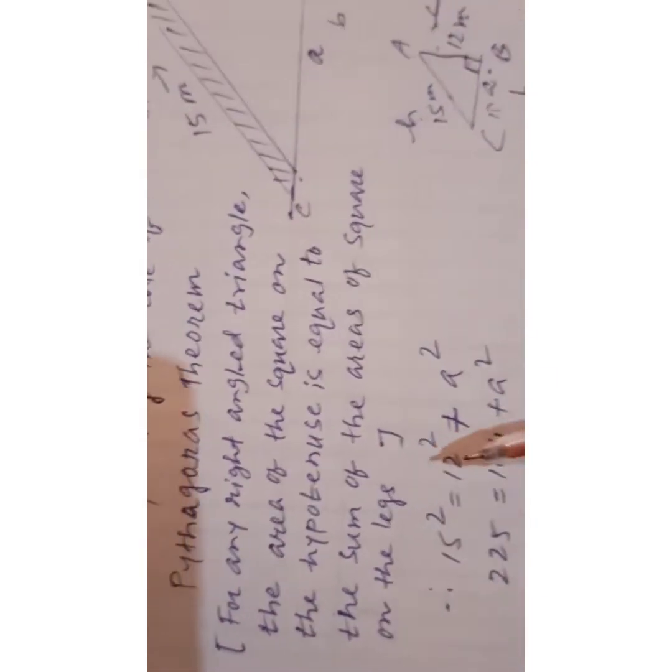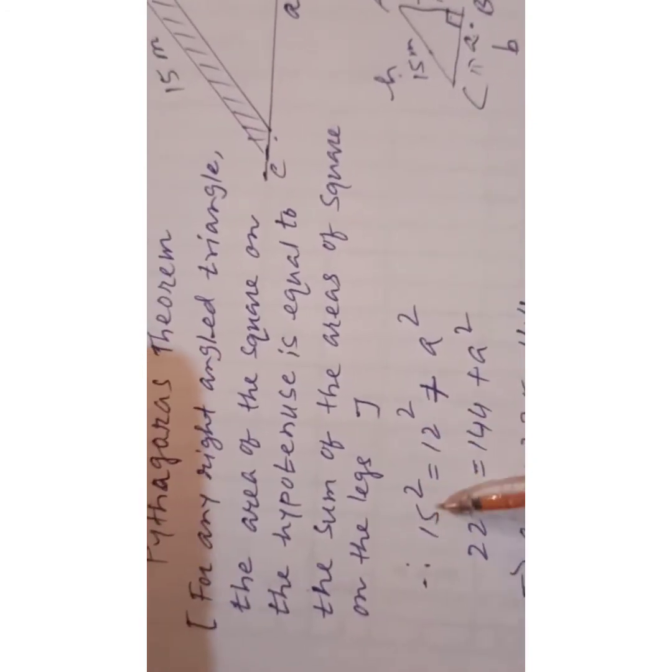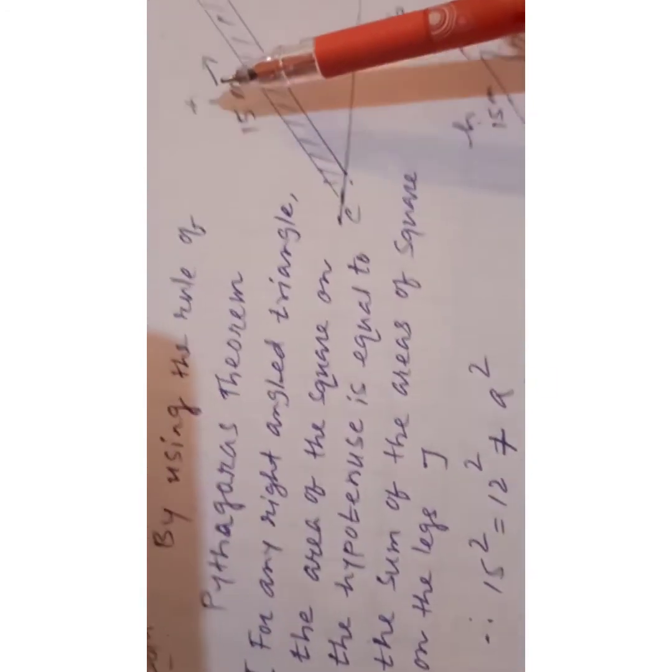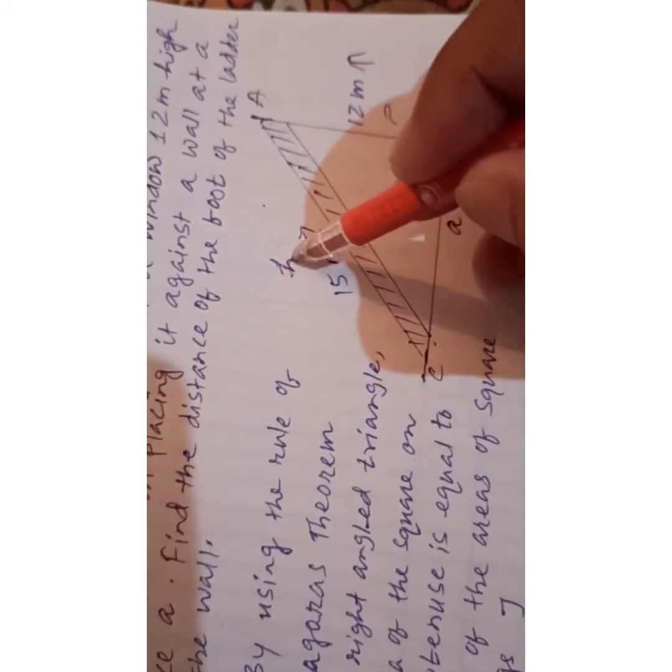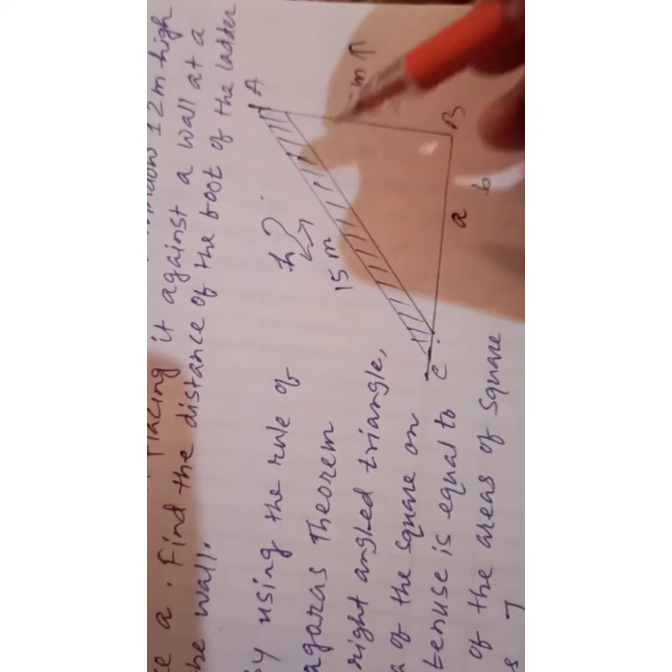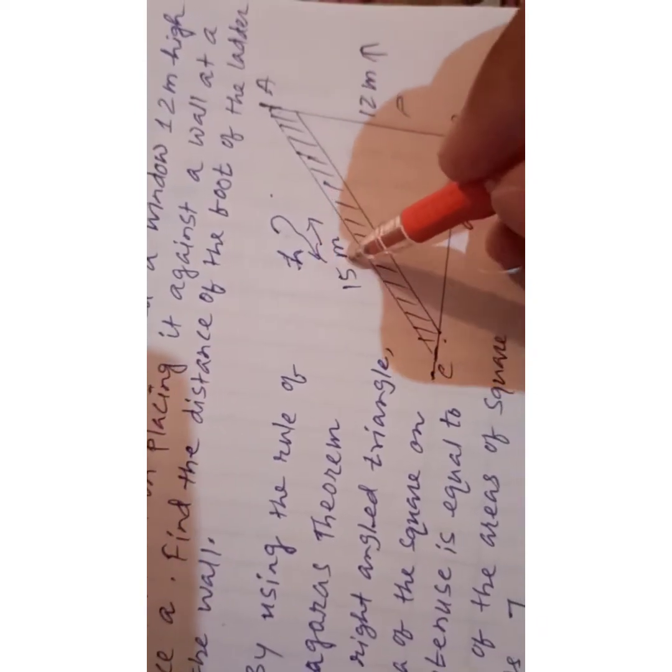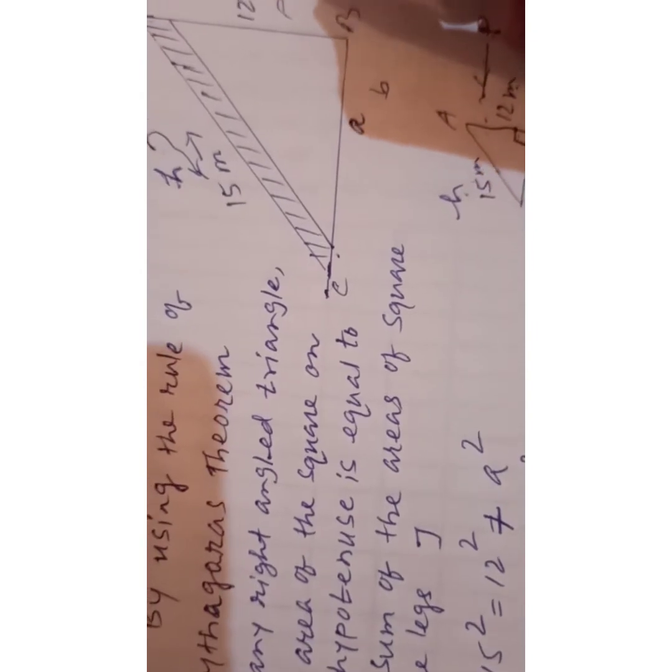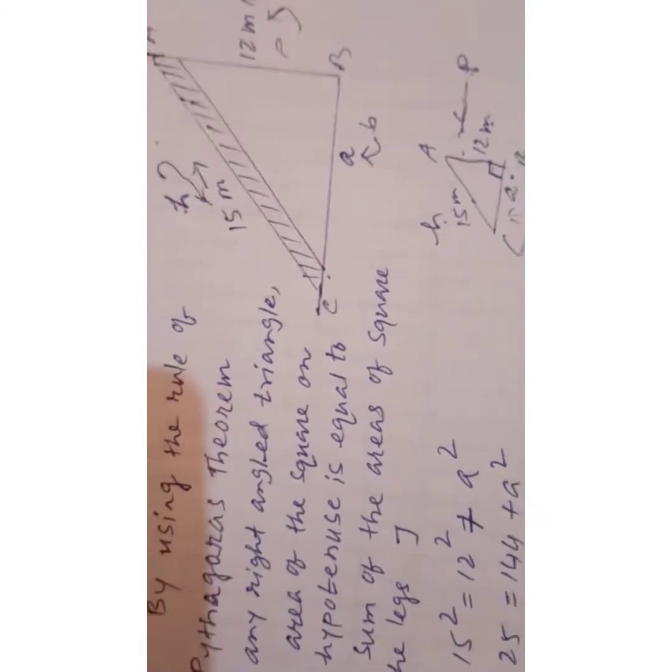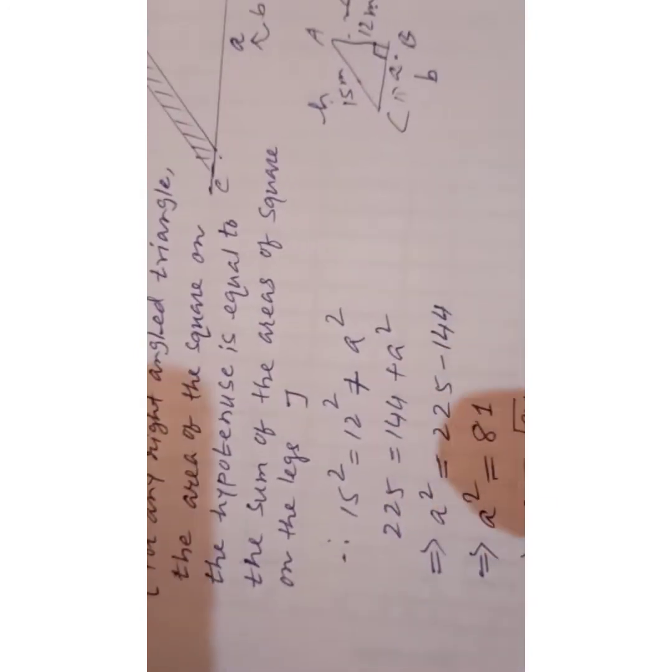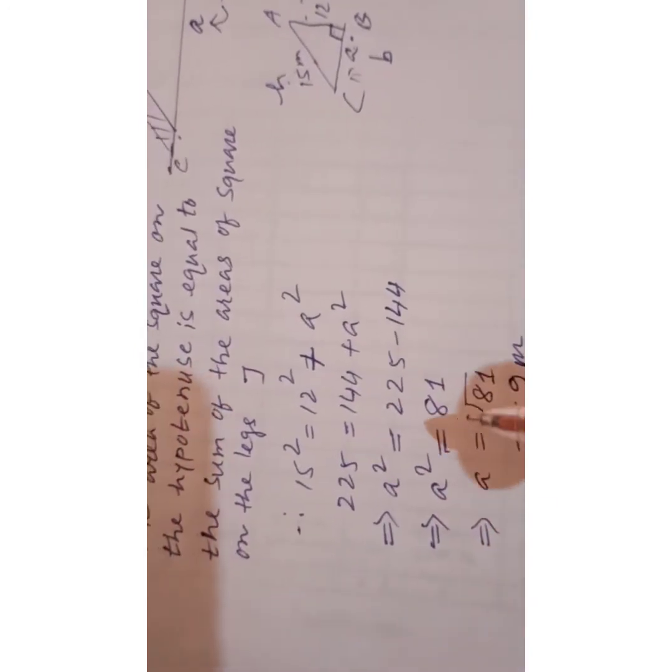Write the values from the diagram: H is 15 meters, P is 12 meters, and B is 'a'. Just put these values into the formula.